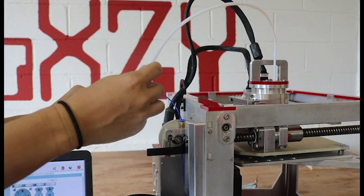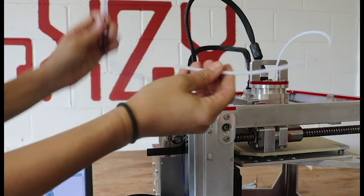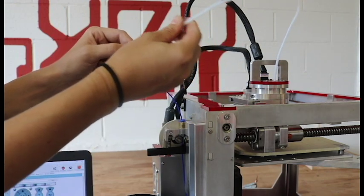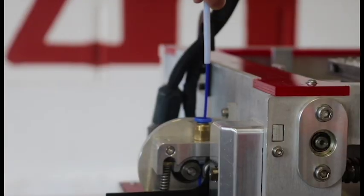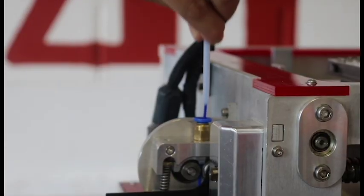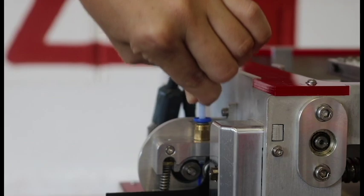Now we're going to manually feed our filament through our Bowden tube, and you want to push the Bowden tube all the way down into the Bowden tube connector, pressing it firmly to where it's securely in there and you can't pull it out.